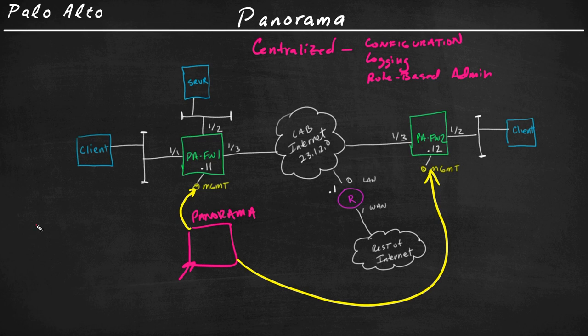And the Panorama appliance itself, it can be physical, or it can be a virtual machine. And it's supported in just a plethora of virtualized environments, including ESXi from VMware, Hyper-V from Microsoft, all the big cloud providers, including Amazon AWS, and Microsoft Azure, and Google Cloud.